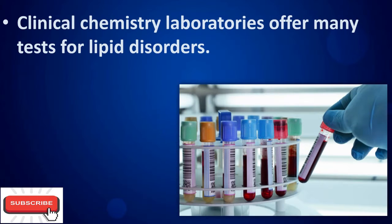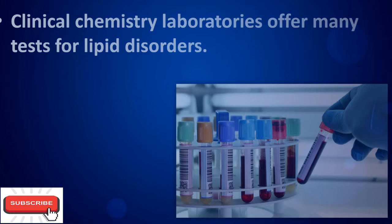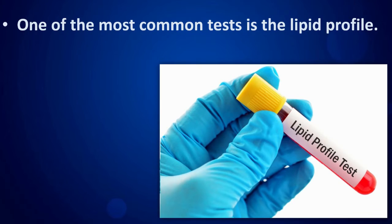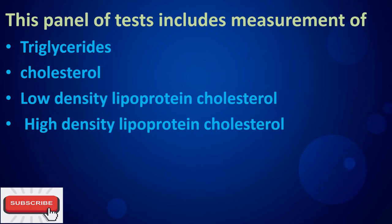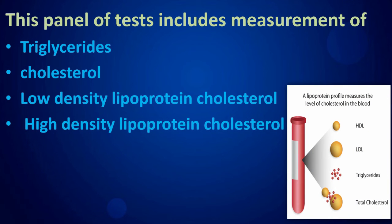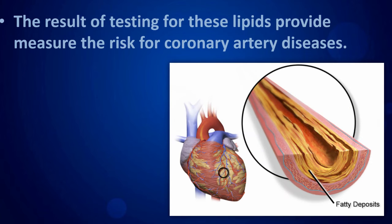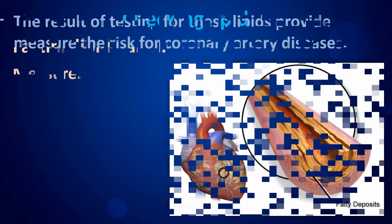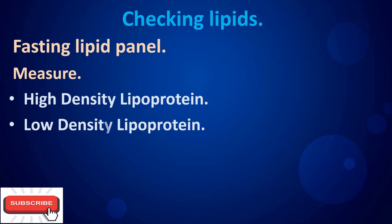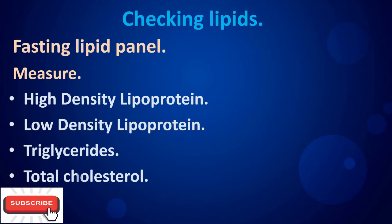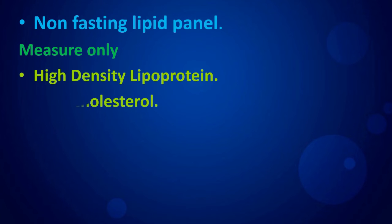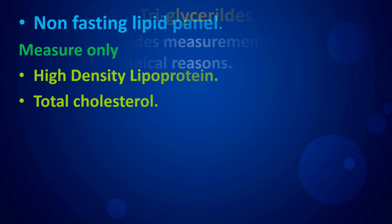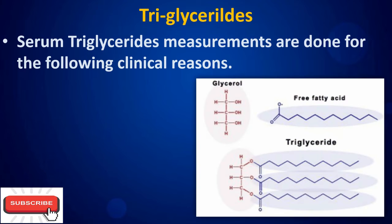Clinical chemistry laboratories offer many tests for lipid disorders. One of the most common tests is a lipid profile. This panel of tests includes measurement of triglycerides, cholesterol, low-density lipoprotein cholesterol, and high-density lipoprotein cholesterol. A fasting lipid panel measures HDL, LDL, triglycerides, and total cholesterol, while a non-fasting lipid panel measures only HDL and total cholesterol.